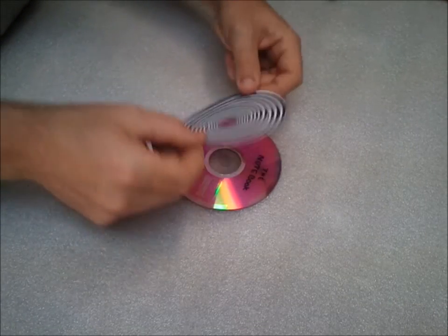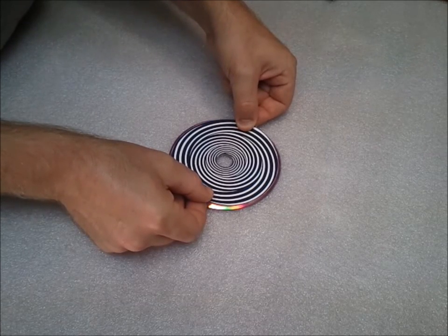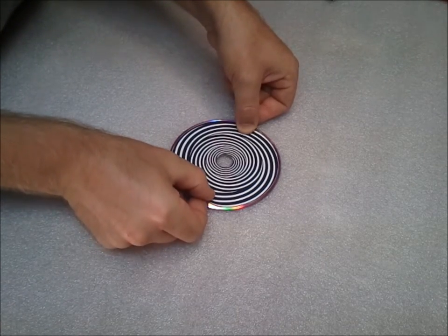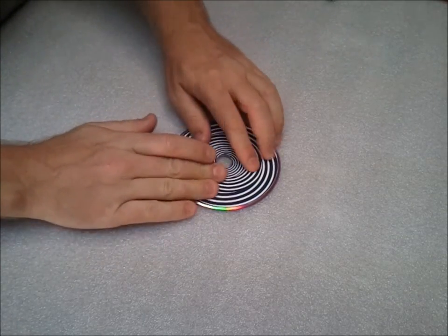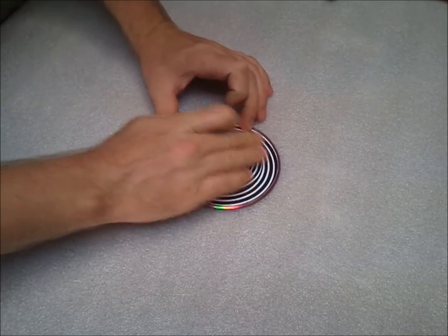Now I've applied the spray adhesive to the back of the paper. And I'm going to center it on my disc as best as I possibly can. It's really important to be as centered as possible so that it spins symmetrically.